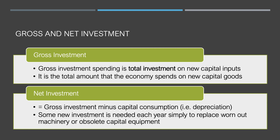We make an important distinction between gross investment and net investment. Gross just means total — the total amount of spending each year by businesses on new capital goods. Net investment is gross investment minus capital consumption, also known as capital depreciation. Every year some investment is required to replace worn-out machinery or capital equipment that has become technologically obsolete. Net investment is essentially the change in the size of a business's or the economy's capital stock from year to year.